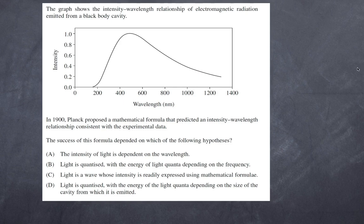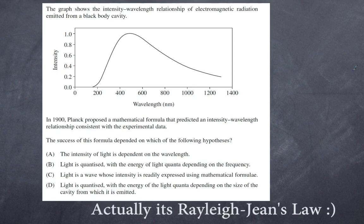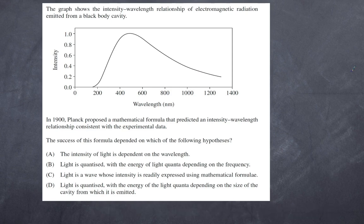That conundrum was basically that the formulas for how light behaved and how intensity behaved were based on the Rayleigh-Jeans formula. That law says that as the wavelength decreased, the intensity increases by a factor of a power of 4, and also that the maximum value moves significantly towards the left — so this graph would actually go up like so — but of course that is not what we experience.